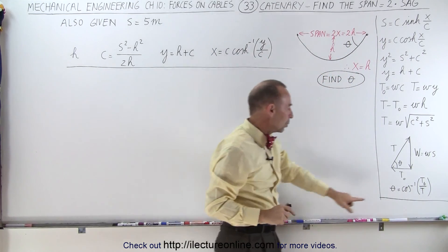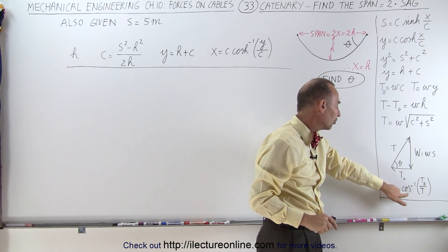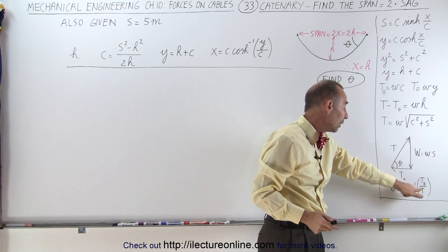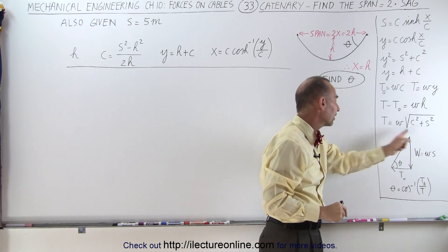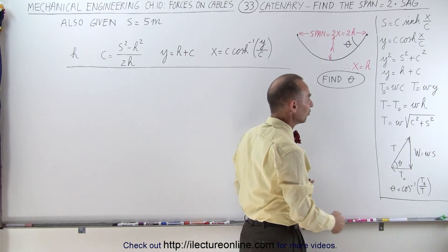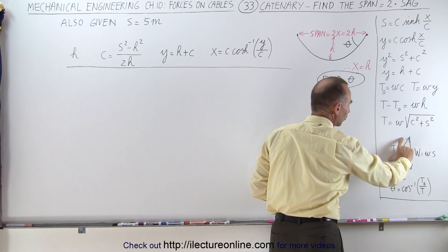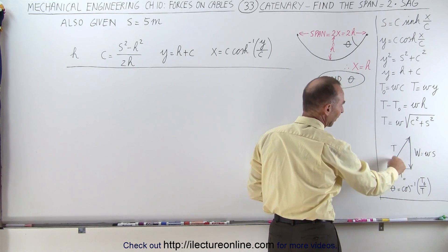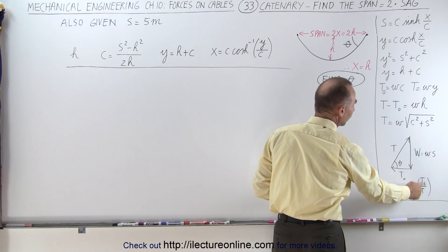Looking ahead, we know that theta can be found by taking the inverse cosine of the ratio of the tension at the low point on the cable divided by the tension at the attached point. You can see here's the triangle of forces, we have the weight of the cable, we have the tension at the low point, we have the tension at the attached point, we're trying to find this angle theta right here.